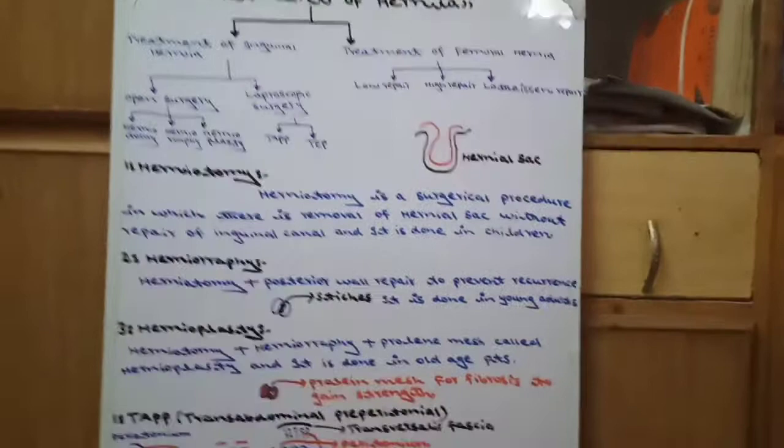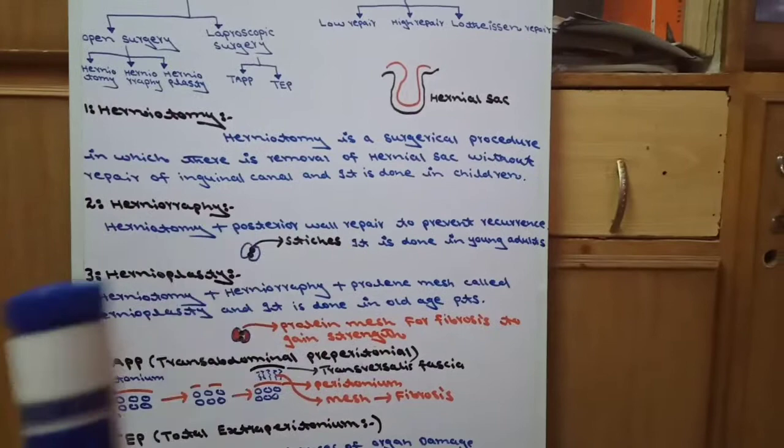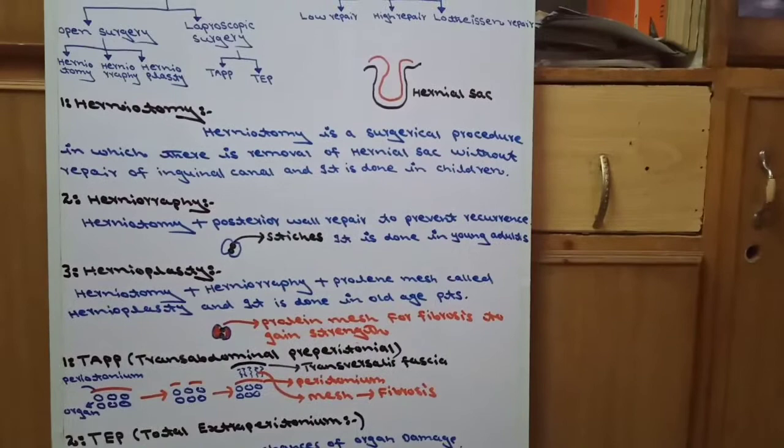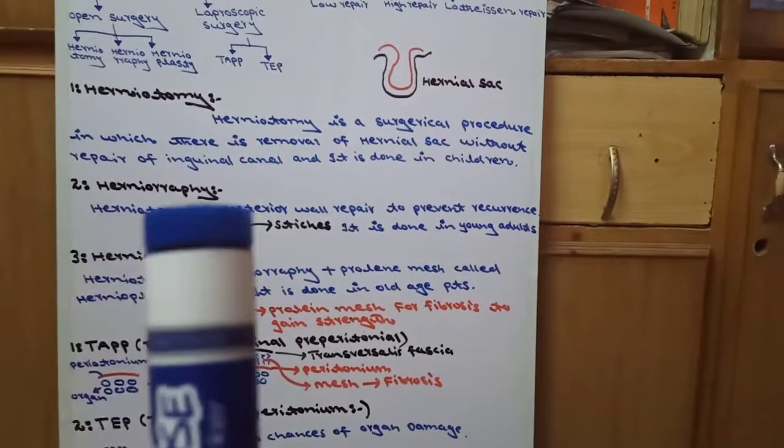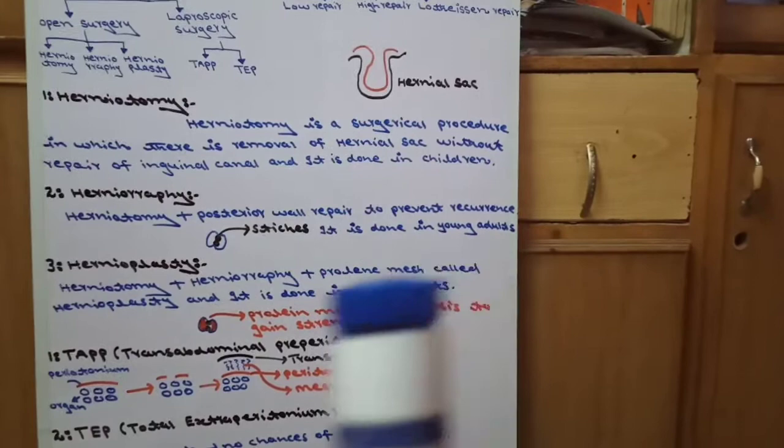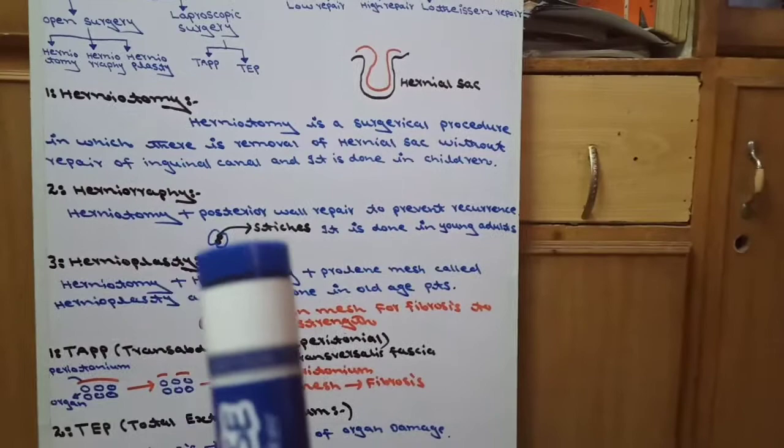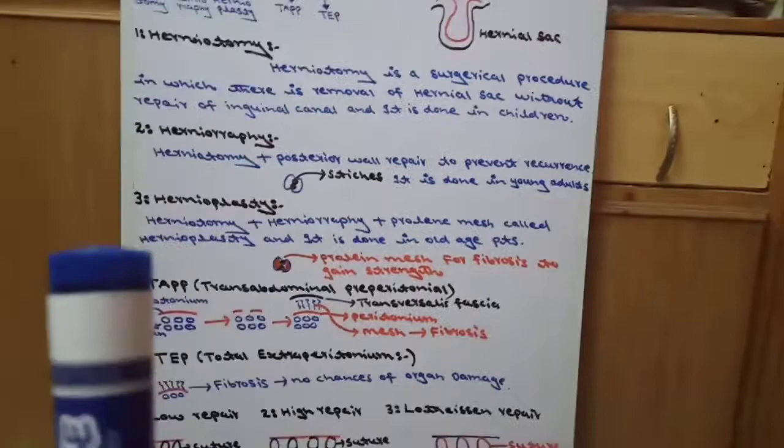Herniorrhaphy - the name itself suggests repair. In herniorrhaphy, we do herniotomy plus posterior wall repair to prevent recurrence. So that hernia does not happen again, we first do herniotomy, then we repair the posterior wall of inguinal canal. We give stitches there. This is herniorrhaphy. It is done in young adults. Here we give stitches, but in herniotomy we only removed the hernial sac.